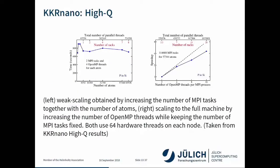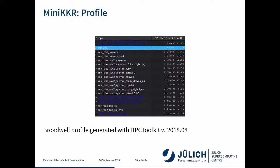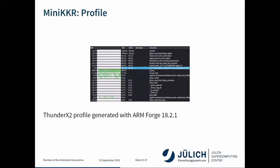Here are a couple of results taken from our web page. The left graph shows weak scaling by increasing MPI ranks together with number of atoms, and the right graph shows scaling for the full machine — I believe this is the BlueGene/Q JUQUEEN machine. From the profile, you can see that ZGEMM dominates with 73.7% on Xeon and even 84% on the ARM machine.